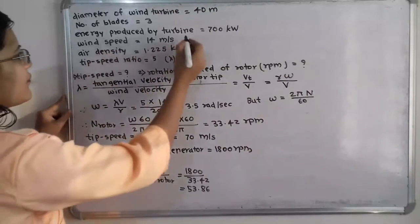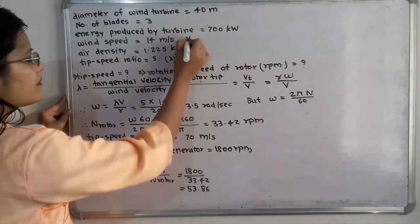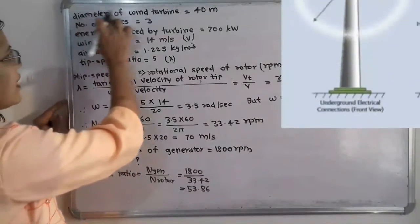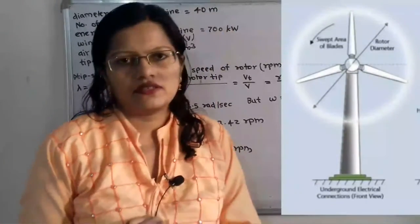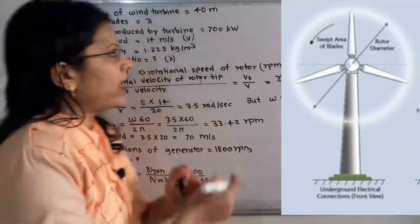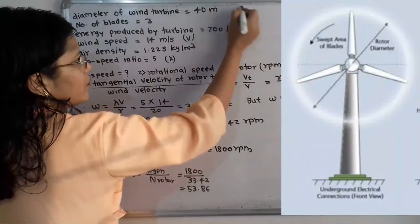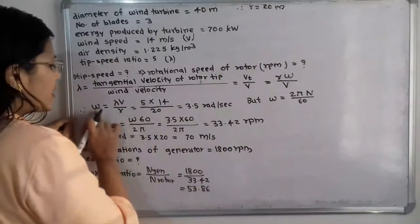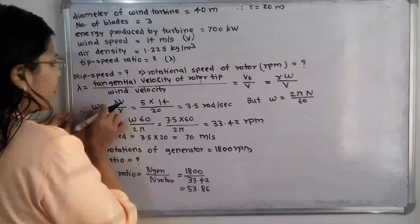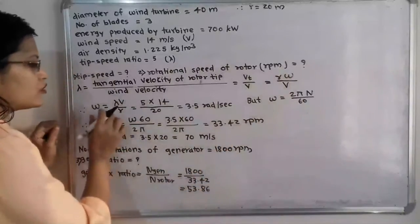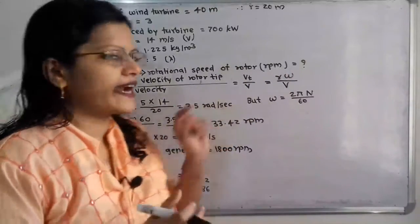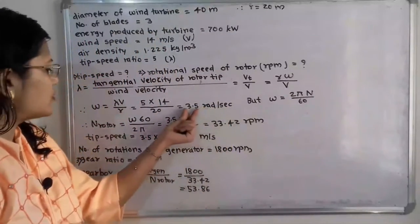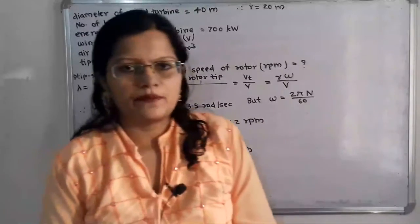The tip speed ratio lambda is given as 5, wind velocity v is given as 14 m/s, and since the diameter is 40 meter, the radius r equals 20 meters. Substituting all values, omega equals lambda times v divided by r, which gives omega equal to 3.5 radians per second. Its unit is radians per second because it is the angular velocity.